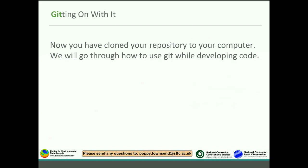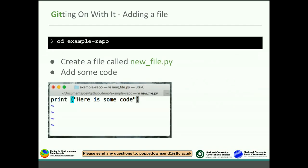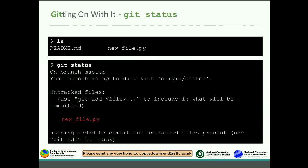Now you've cloned your repository, we'll go through how to use git while developing code. Let's add a file — we're going to change directory into our directory called 'example repo' and create a file called newfile.py and add some code. I've added a very basic print statement. Then we can check what we've done using git status. If we do an ls, we now see we've got readme, which we had before, and this newfile.py. Git status tells you information about where you are — it says you're on the master branch, which is the main one, and that you're up to date with the remote repository, but there are some untracked files highlighted in red. It even tells you what to do: 'git add file to include what will be committed.'